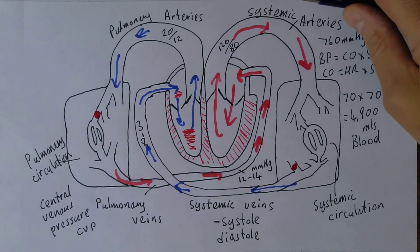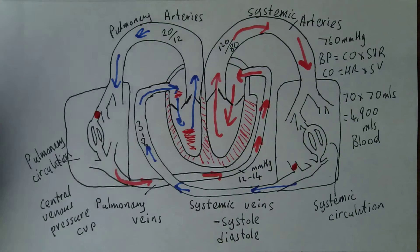In this clip we want to consider the systemic arteries. What diseases affect systemic arteries? We notice the normal blood pressure in the systemic arterial system is 120 over 80 millimeters of mercury, 120 systolic, 80 diastolic.